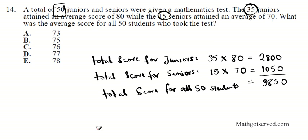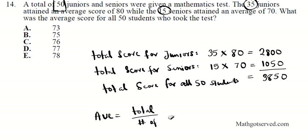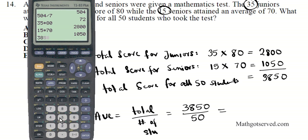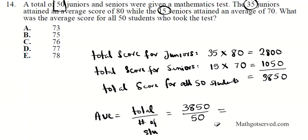So what is the average? The average is total divided by number of elements. The total is 3850, divided by the total number of students, which is 50. 3850 divided by 50 equals 77. The average score for the 50 students is 77. Your answer is D.